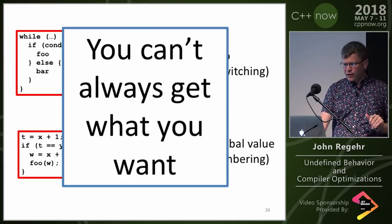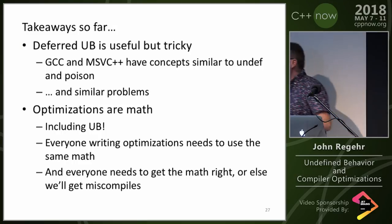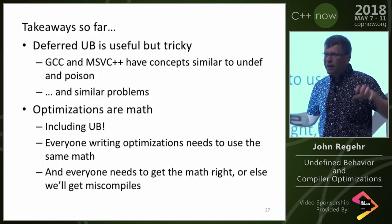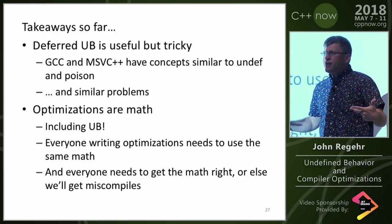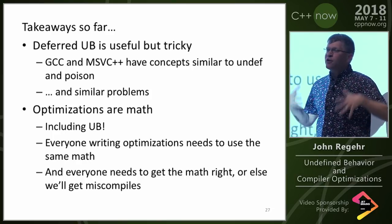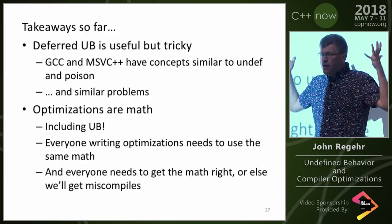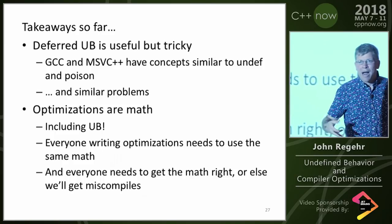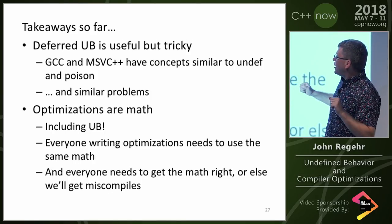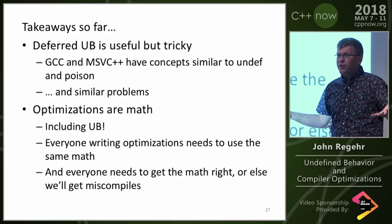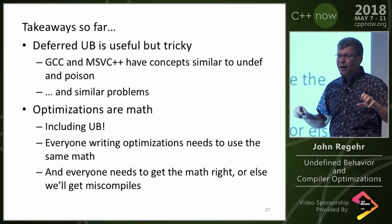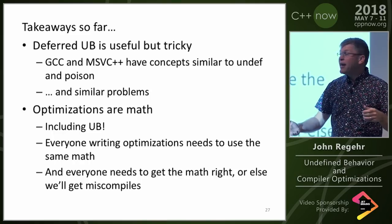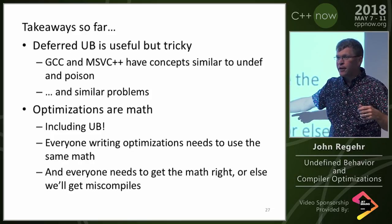The things to take away are: deferred undefined behavior is a super useful and elegant concept but quite tricky, and analogous problems occur in any other compiler where similar concepts have been introduced. Optimizations are math — not even hard math, just math we can't quite wrap our heads around because the cardinality of the sets involved are big. Not only are optimizations math, but reasoning about undefined behavior using math is also easy — this is just not hard mathematically, it's just hard for humans. The real problem is that everyone writing optimizations needs to use the same math and then nobody can make a mistake once they're using the same math.